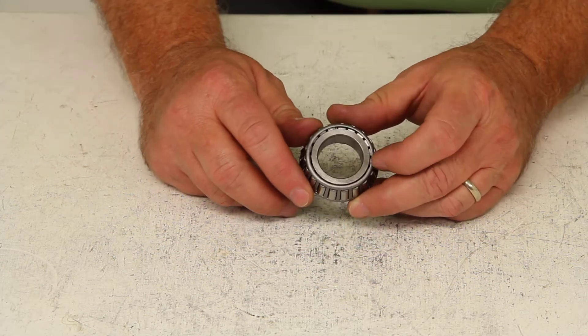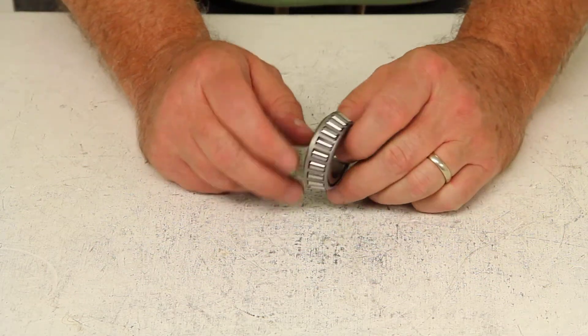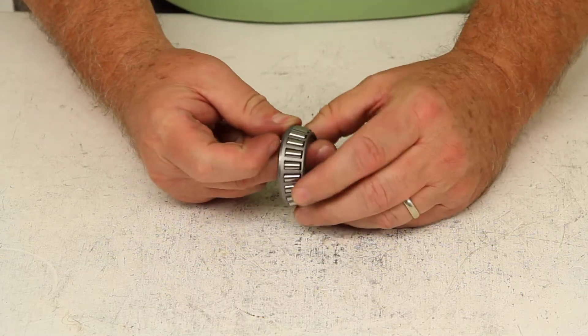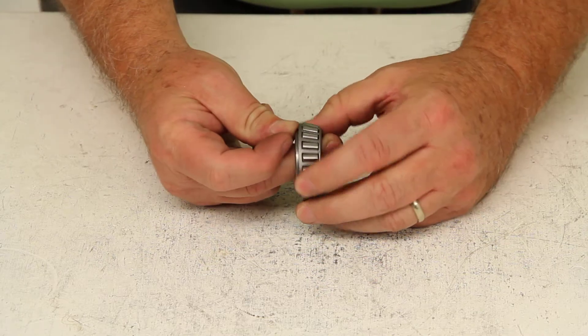Today we're going to review part number L44643. This is a TruRide trailer wheel bearing for inner or outer bearing use.